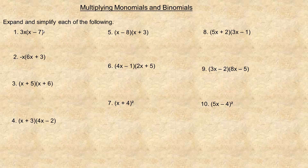To do this multiplying, in number one the 3x distributes into the brackets, which means we multiply by both terms inside. First, 3x times x gives us 3x squared — there's really a 1 exponent on each x, so two x's multiplied gives x squared. Then 3x times negative 7 is minus 21x, since there's only a single x in that product.